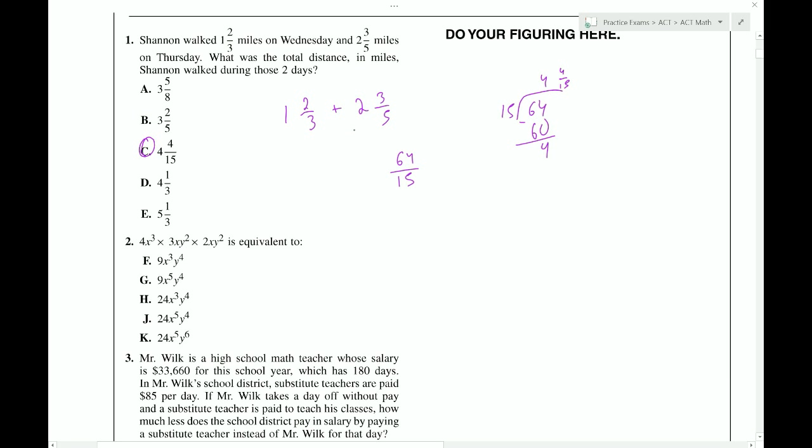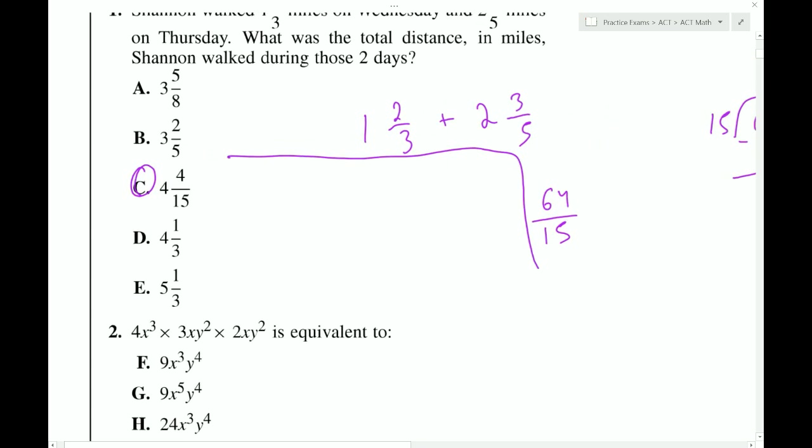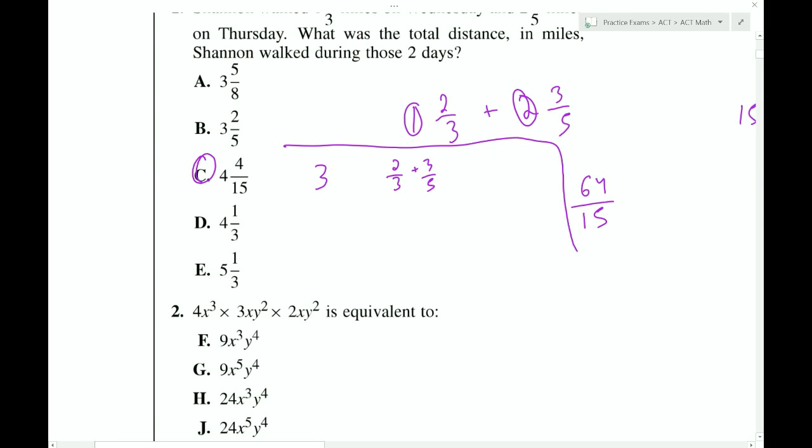While we're on the topic, I'd like to also discuss how to do this without the calculator. Just because it's helpful for your own knowledge, but also if you're taking the SAT as well, then there is a no-calculator section. So it's good to get comfortable with that procedure. So I'll show you a couple of different ways. First of all, we can add the full numbers together to get three. And then we can add the fractions together, two-thirds and three-fifths.